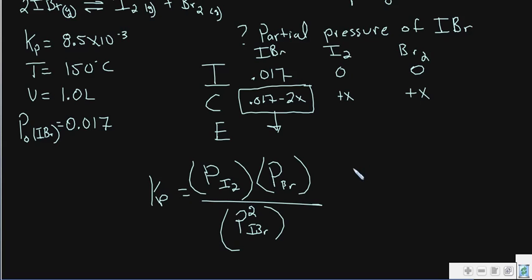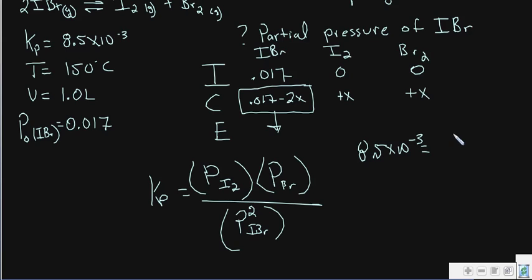Inserting our numbers: 8.5 times 10 to the negative third equals x squared on top — because both I₂ and Br₂ have partial pressure x — divided by the partial pressure of IBr at equilibrium, which is 0.017 minus 2x, and that quantity is squared.